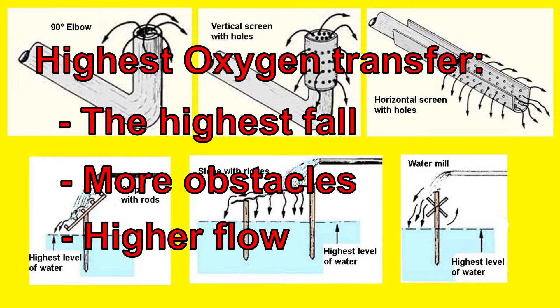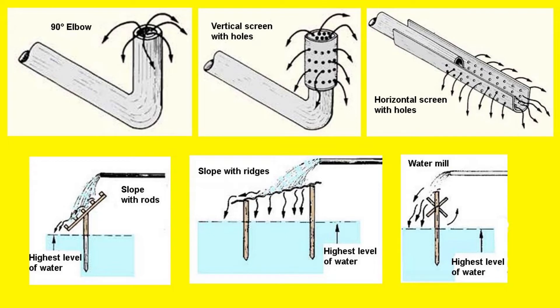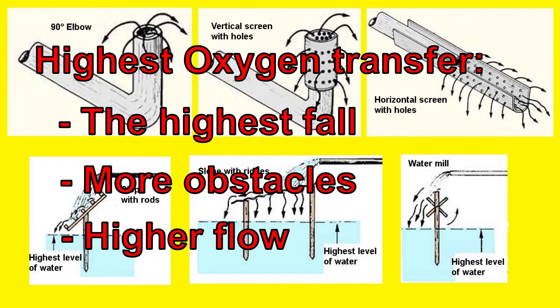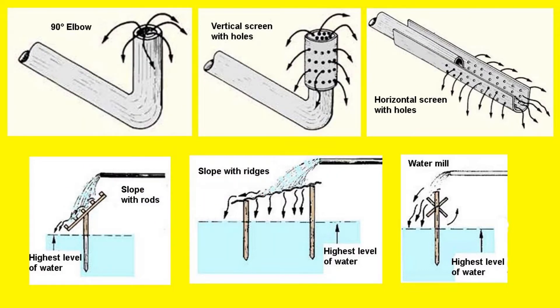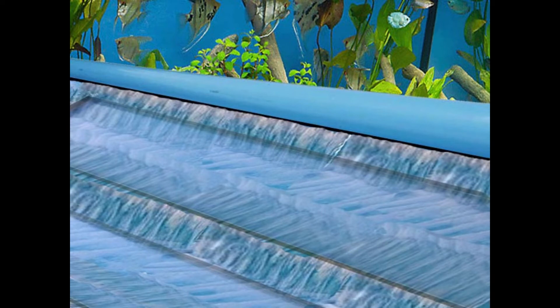Highest oxygen transfer will come with the highest fall, the more obstacles it finds fragmenting the film of water through holes, slots and ridges, and the higher flow. If we increase the capacity of the pump, we can take the waterfall higher and produce more gallons per minute. When we increase the flow, we must make sure the outlet has the proper size. When we make the water flow over a lighter surface, the film gets thinner and can absorb more oxygen.